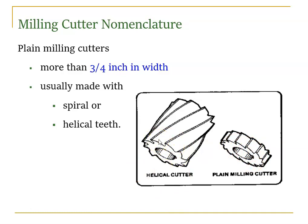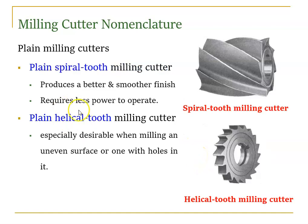The helix angle is similar to what we have seen in the drilling machine tool. If you draw a perpendicular line, the helical type has some inclination at that perpendicular line, so the cutting edges are inclined. In the plain milling cutter, the inclination angle is zero. So there are two types: spiral, which we call plain, and helical.